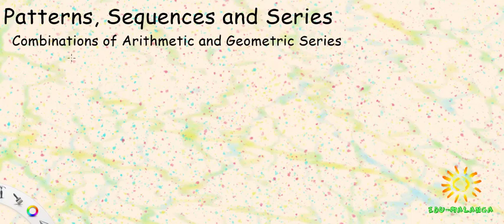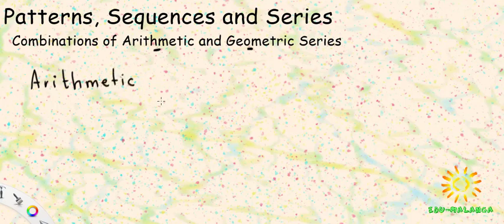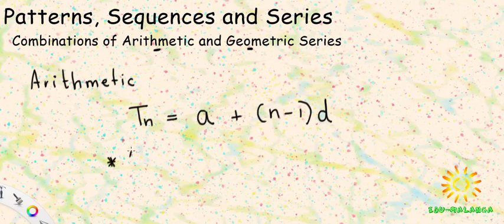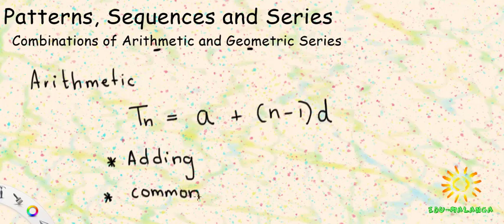The first thing we will do is recall the two kinds of series we're looking at, which are the arithmetic and the geometric. The arithmetic series comes from an arithmetic sequence, and the general term looks like this: Tn = a + (n-1)d, where a represents the first term and d is the common difference. With arithmetic sequences we have addition — you add one number to all the terms to get the next term.